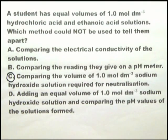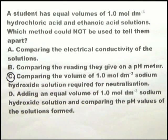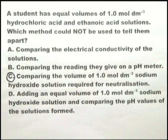Let's look at option D — the unusual one. Adding an equal volume of 1 mol dm⁻³ sodium hydroxide solution and comparing the pH values. In this case you can tell them apart. Adding equal volume of NaOH to HCl gives sodium chloride, which is neutral — pH 7. Adding equal volume of NaOH to ethanoic acid gives an alkaline solution, because mixing a weak acid with a strong alkali in equimolar quantities gives a pH higher than 7, around 9 or 10. So option D can tell them apart. The method which cannot be used to tell them apart is C: comparing the volume of sodium hydroxide solution required for neutralization.